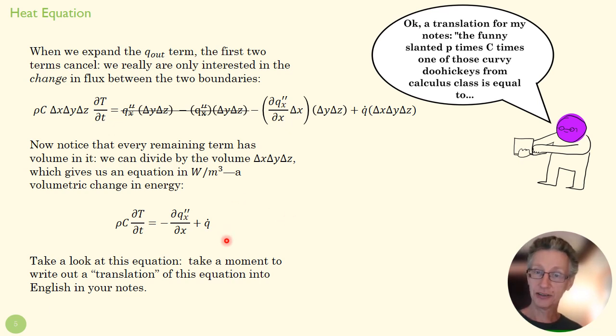If this is positive, if that slope is positive, then this term is negative and that's going to be my energy in my volume is going down and my temperature is going to go down. So that's all this says—same thing that that first law says, just in a differential form.